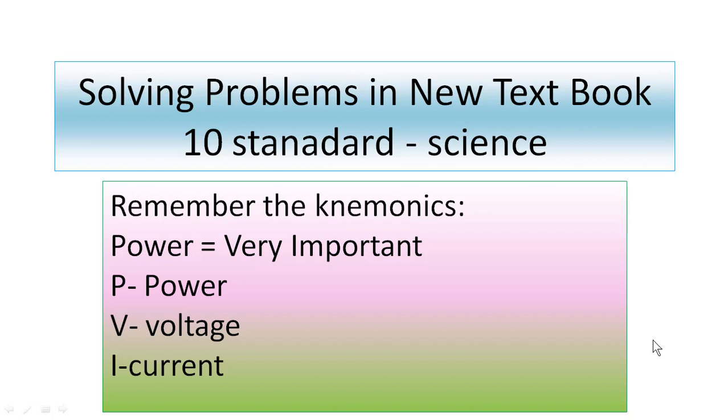There I gave certain mnemonics to remember relations of V, I, R, Q, etc. Look at these relations. Power equals very important - this is only the mnemonic. Look at the first letter: P, V, and I. But actually power is equal to voltage into current, V into I. Here P is power, V is voltage, and I is current. With this basic, let us enter into the lesson.